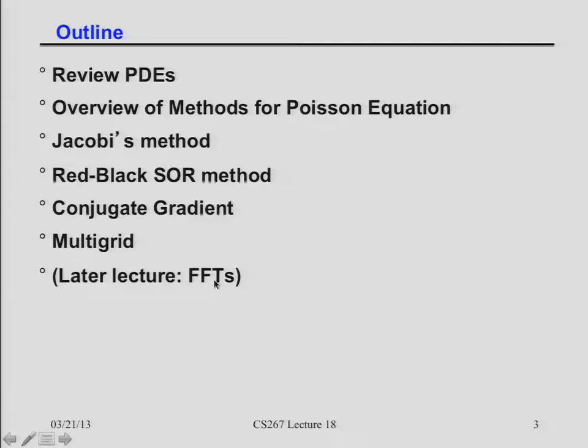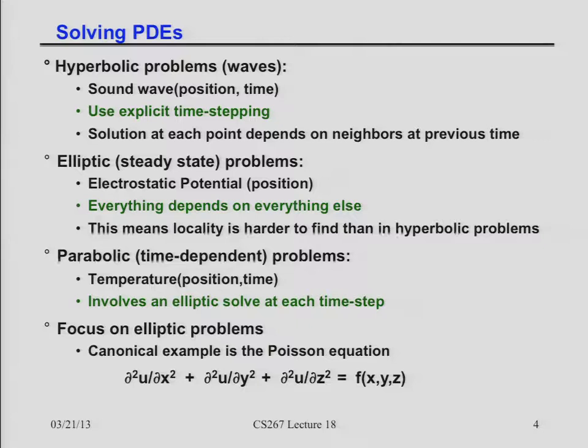There's one other algorithm that could also be the fastest way to solve Poisson's equation — that uses the fast Fourier transform — and we'll have a lecture on that later. Just to remind you of the three different kinds of PDEs, they're all solved with structured grid methods. There are basically wave equations, steady-state stuff like gravity and electrostatics, and then parabolic systems, things like the heat equation.